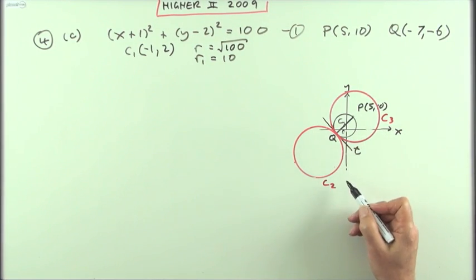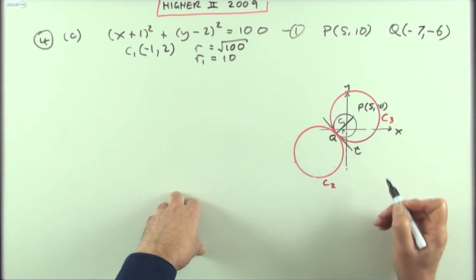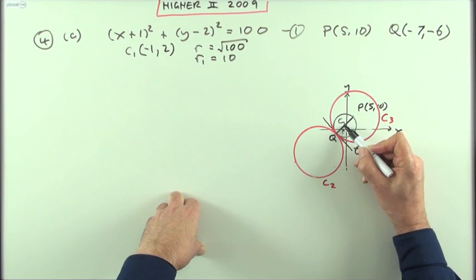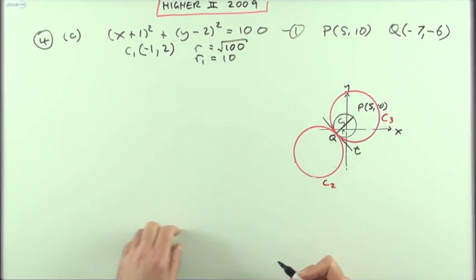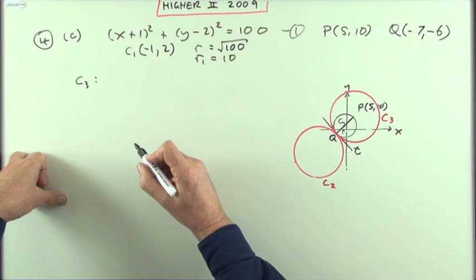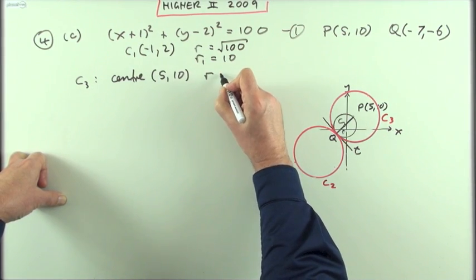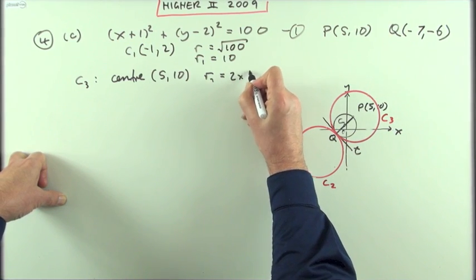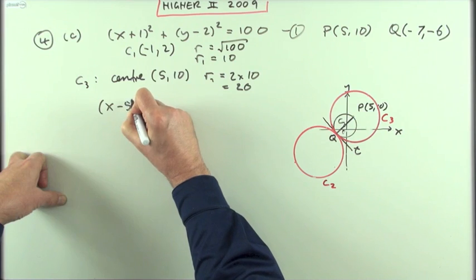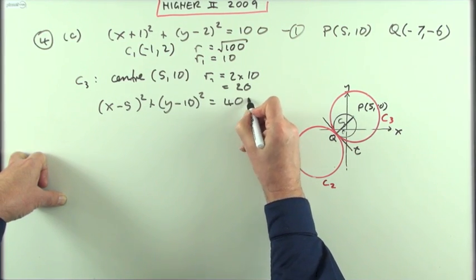Which means I know the radii of these two circles are both 20. Now what about the centers? Well P must be the center of C₃, because this distance here being 20 is the same as the radius. So for C₃ that means I know that the center must be (5, 10) and the radius r₂ must be 2 times 10 which is 20. So for this circle it would be (x - 5)² + (y - 10)² = 400.